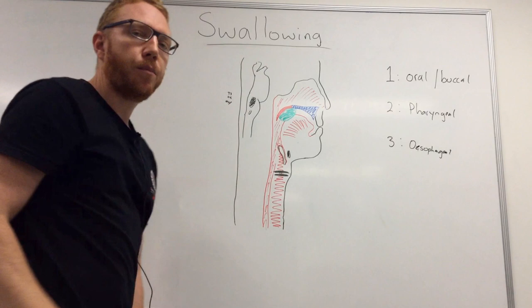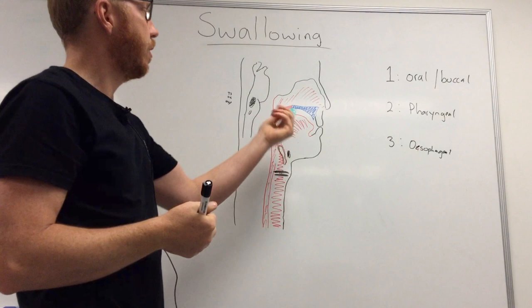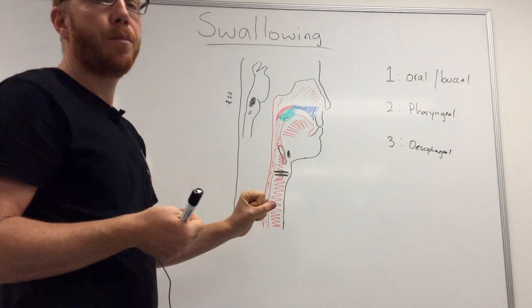Sitting right behind, we have the brainstem, which is important for the neurological control. Let's now go through these three phases and see how each one works to get this bolus of food down into the stomach — a process that takes about six to ten seconds from mouth to stomach — and how we do that without compromising the airway.